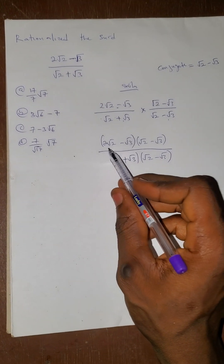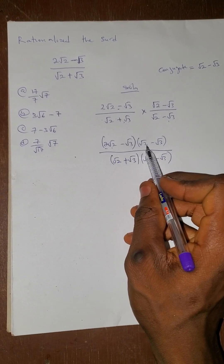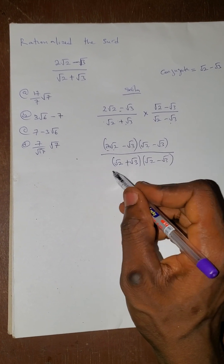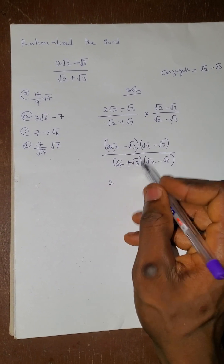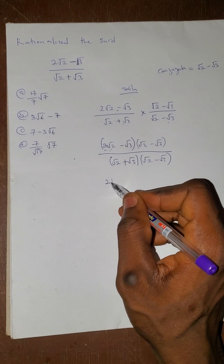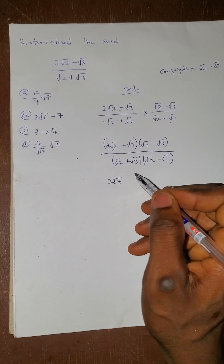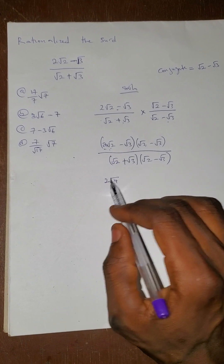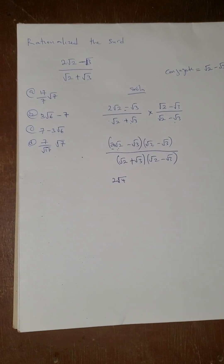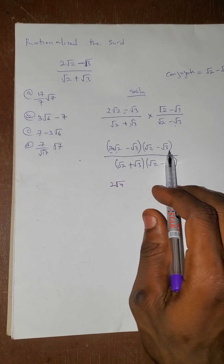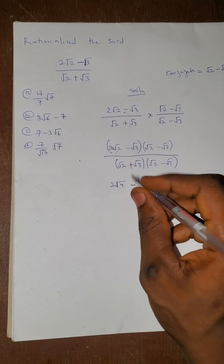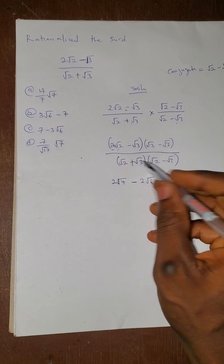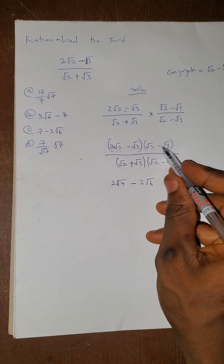Now expanding the numerator: 2√2 multiplied by √2 gives 2 times √4, which is 2 times 2 = 4. Then 2√2 multiplied by minus √3 gives minus 2√6, because 2 times 3 gives 6 under the root.